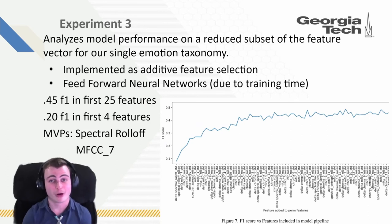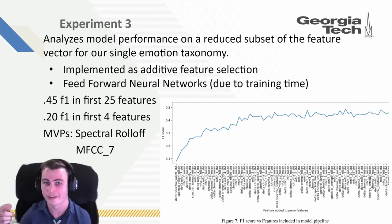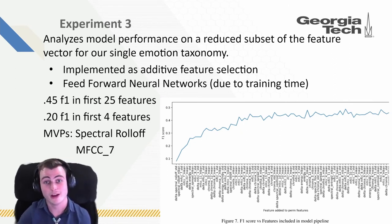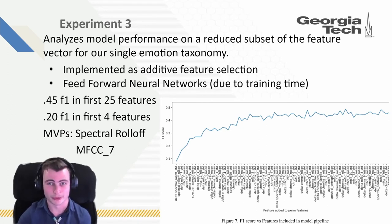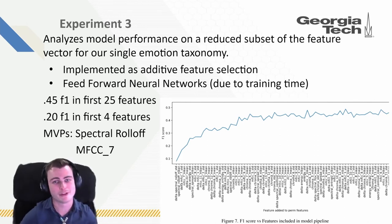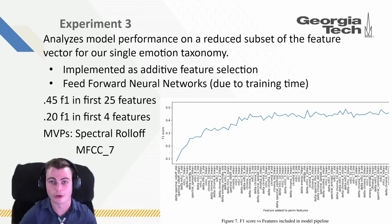In experiment 3, we analyzed model performance when training on a reduced subset of our overall feature vector using a single emotional taxonomy. We implemented additive feature selection such that a single feature is trained, and then whichever feature has the highest accuracy is added to our permanent feature list; this process is repeated until we've used every single feature. In total, this meant training approximately 9,316 networks, requiring us to use feed-forward neural networks for GPU vectorized algebra. After just the first 25 features, we achieved an F1 score of 45, and after just the first four features — aggregations of spectral roll-off and MFCC-7 — we achieved an F1 score of 20, which is extremely encouraging for developing models based on reduced feature subsets.